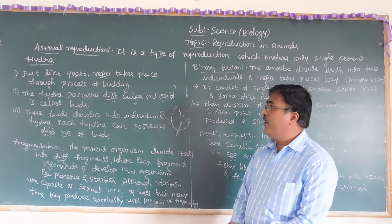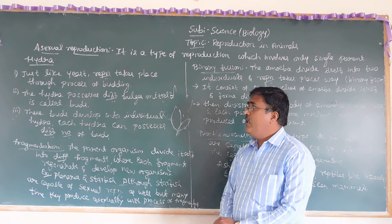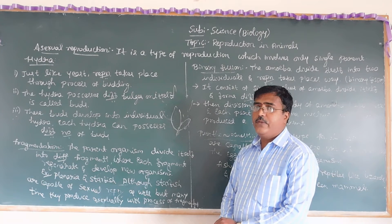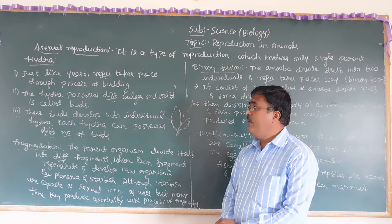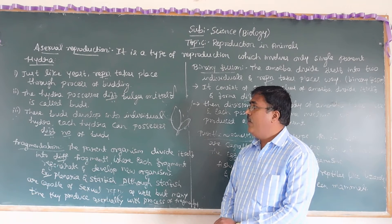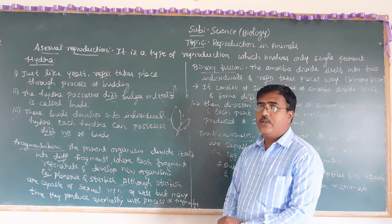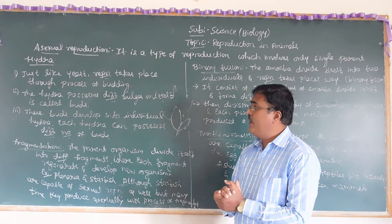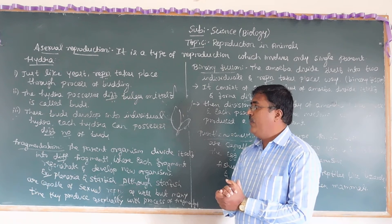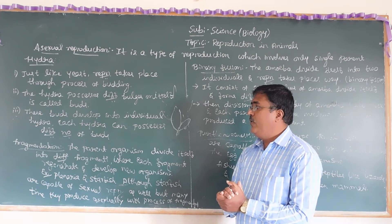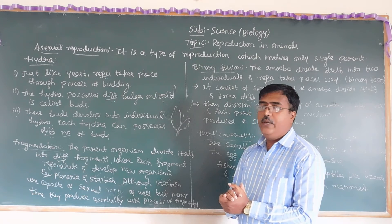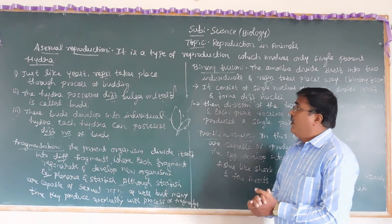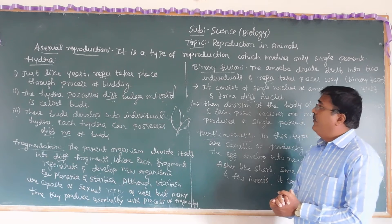Similarly, in yeast, reproduction also takes place through the budding process. Budding means there will be bulges in cells that change in shape — these are called buds. These buds develop into individual organisms, with a different number of buds formed in the process.